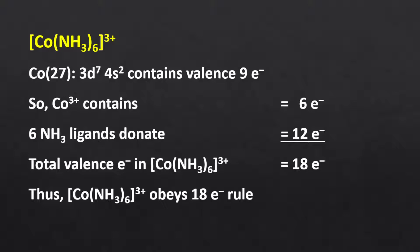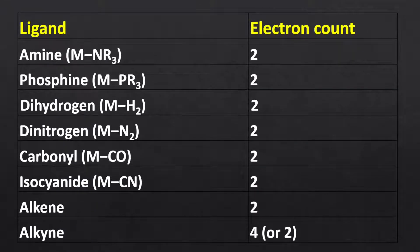One can easily calculate the valence electron count of the metal ion, but the problem arises in finding the electron count of the ligand, as there are so many ligands — some neutral, some negatively charged — and they differ in the type of electrons used in bond formation with metals. Here I have tabulated the electron count of various ligands. The nitrogen and phosphorus atoms in amine and phosphine ligands use their lone pair of electrons in bond formation with the metal, so they donate 2 electrons. The electron count of hydrogen and nitrogen diatomic molecules is also 2. Carbonyl, cyanide, and alkene use their pi electrons in bond formation with the metal, so they also donate 2 electrons. Alkyl is a flexible ligand which can donate either 4 or 2 electrons depending on the complex requirement to show stability.